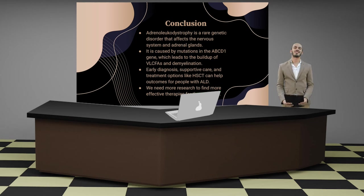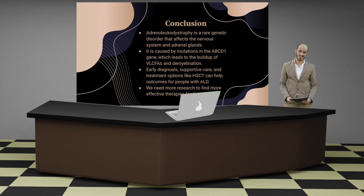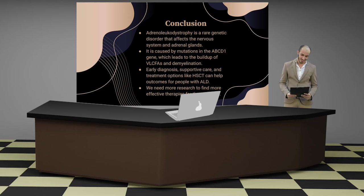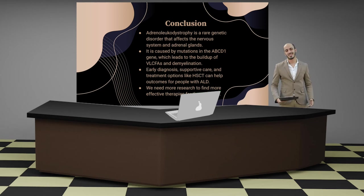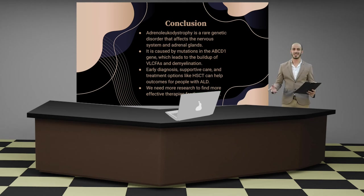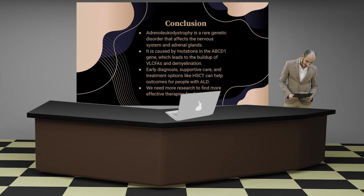Adrenoleukodystrophy is a rare genetic disorder that affects the nervous system and adrenal glands. It is caused by mutations in the ABCD1 gene, which leads to the buildup of VLCFAs and demyelination. Early diagnosis, supportive care, and treatment options like HSCT can help outcomes for people with ALD. We need more research to find more effective therapies for the condition. And that's it for today's lecture — you can go ahead and get back to studying for the next test.